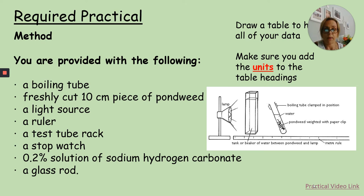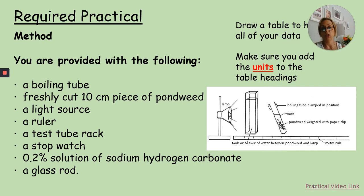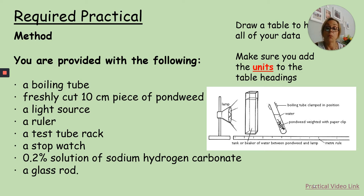This diagram would be really helpful to have fully labelled in your book, because you may be asked how to investigate the rate of photosynthesis in plants and you need to remember this particular practical. We tend to use boiling tubes and put pondweed into them with some pond water and sodium hydrogen carbonate. We add sodium hydrogen carbonate to make sure the plant has a plentiful supply of carbon dioxide so that doesn't become a limiting factor and make our results invalid.